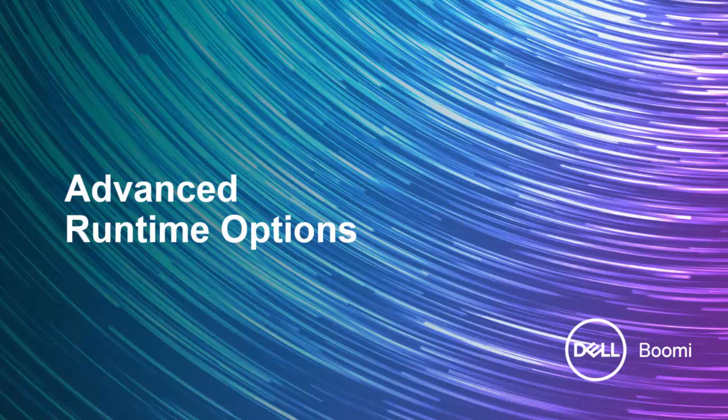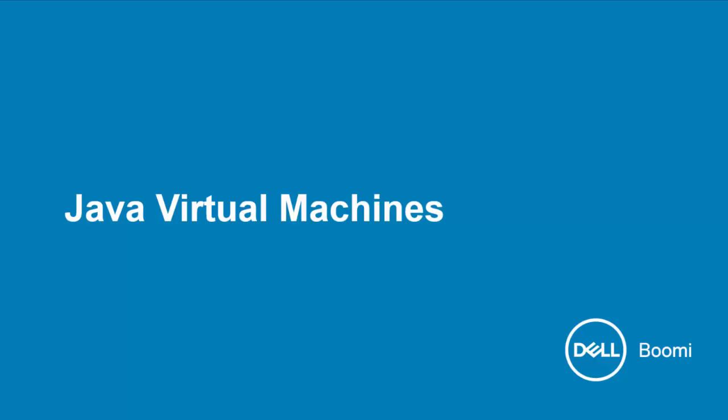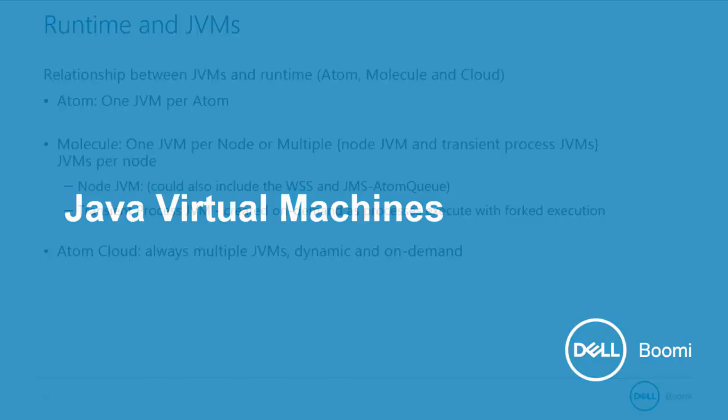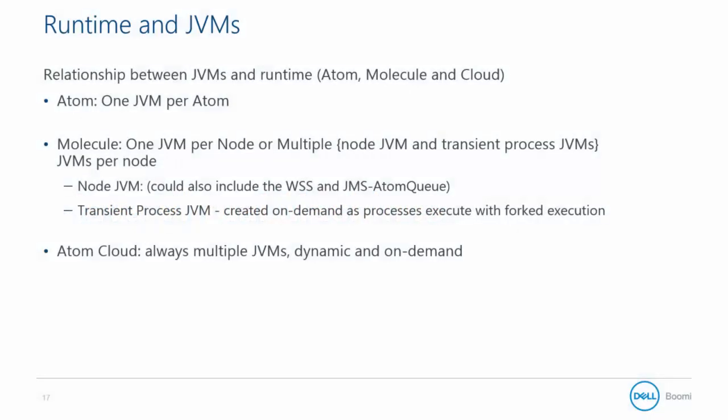This next section will cover some advanced runtime options. First, let's do a quick review of Java Virtual Machines. A single JVM runs on a single machine, so an atom only has one JVM to handle the workload associated with that atom.